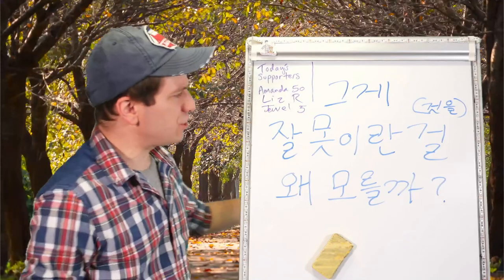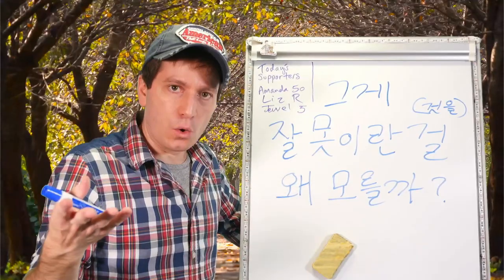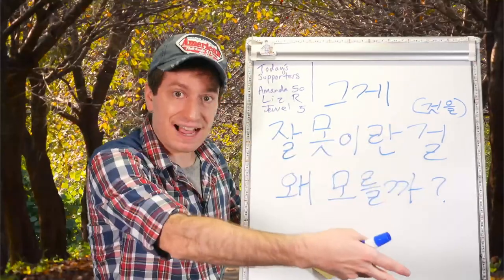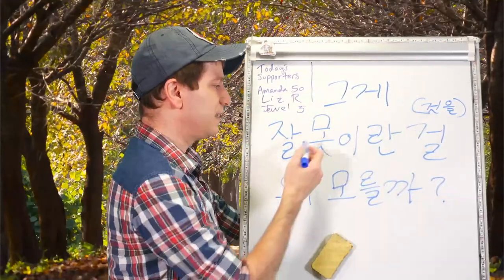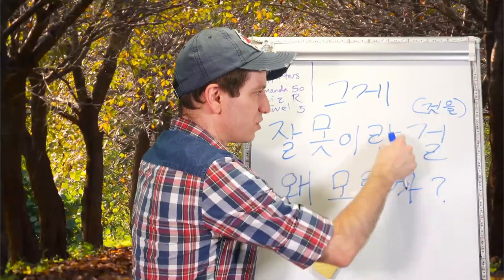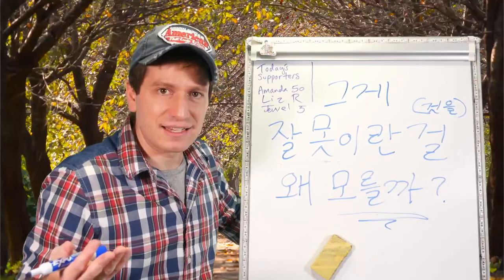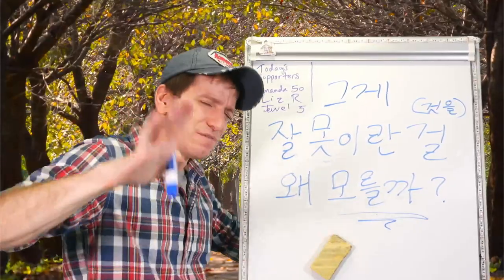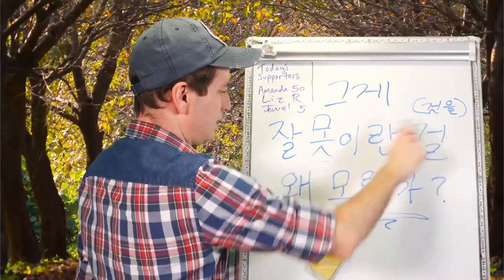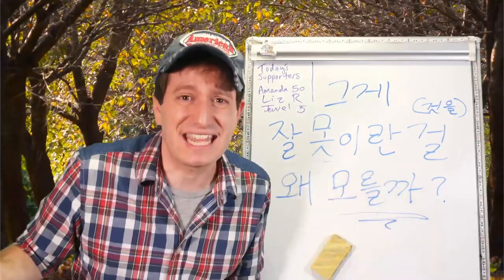One common situation where you'd use 이라는 것 to mean 'the fact that' is with 알다 (to know) or 모르다. 그게 잘못이란 걸 왜 모를까? 잘못 is an error, a mistake. How could they not know the fact that it's a mistake? How could they not know that was a mistake?